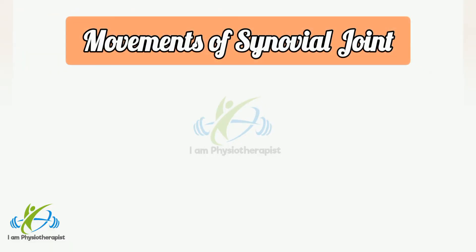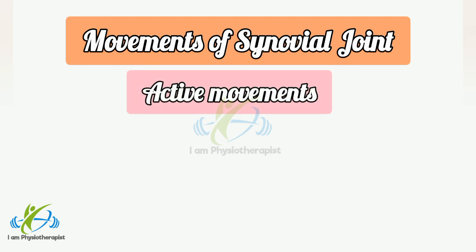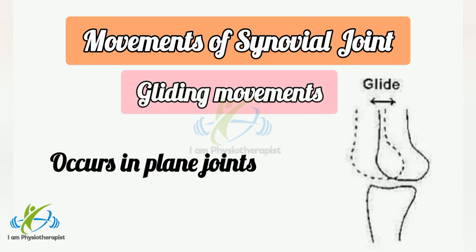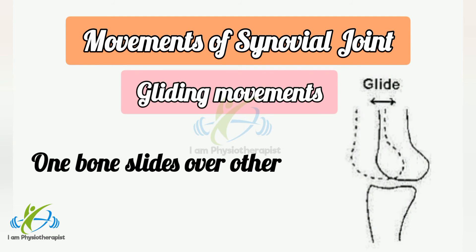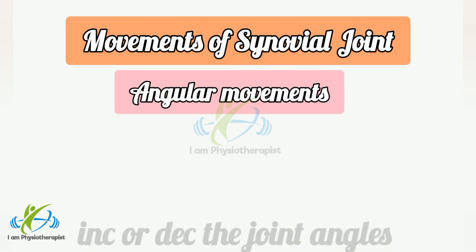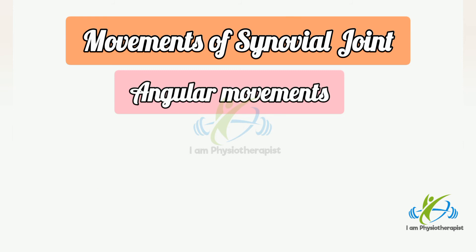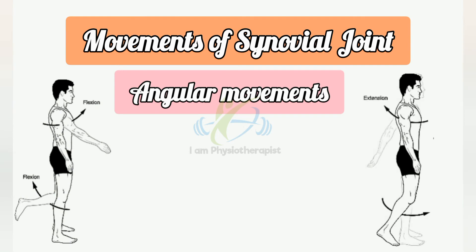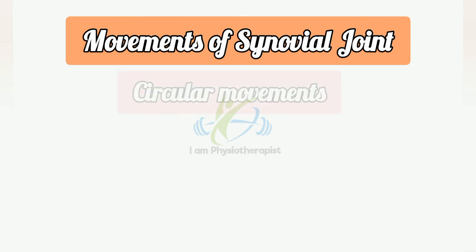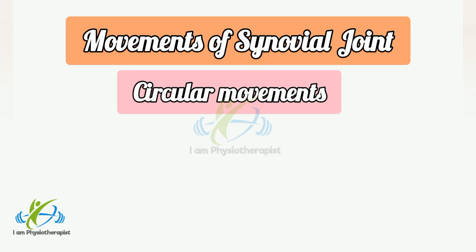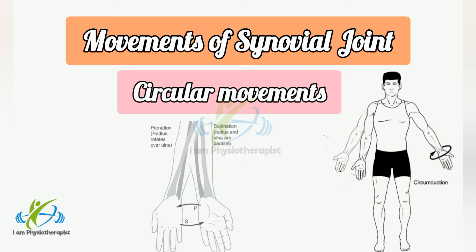Movements of synovial joints. Three types of movements occur at synovial joints: gliding movement, angular movement, and circular movement. Gliding movement occurs in plane joints where one bone slips over the other in a particular direction. Angular movements increase or decrease the joint angles produced by the articulated bones; the four types are flexion, extension, abduction, and adduction. Circular movements are possible only if the round articular surface of one bone articulates with the corresponding cup-shaped articular surface of the other bone. Examples of circular movements are circumduction, supination, and pronation.